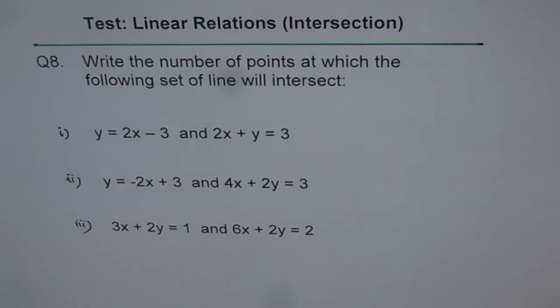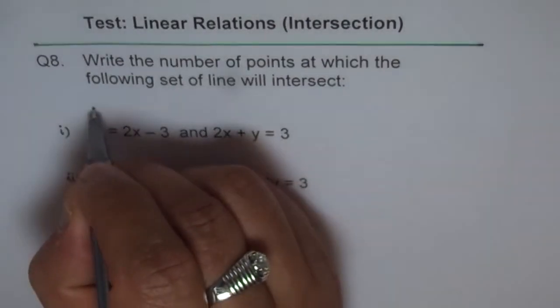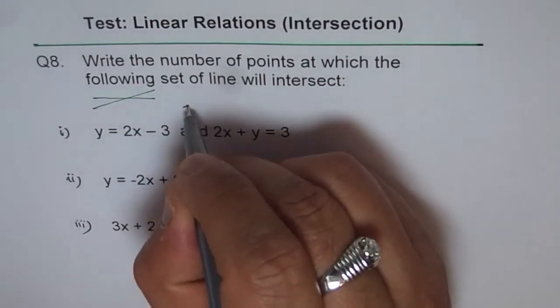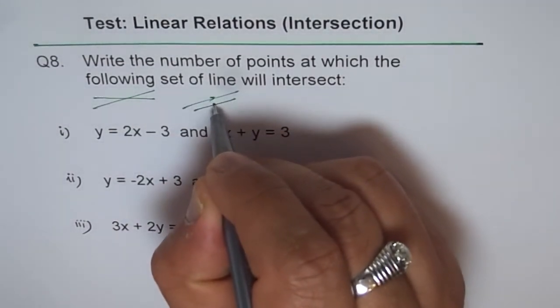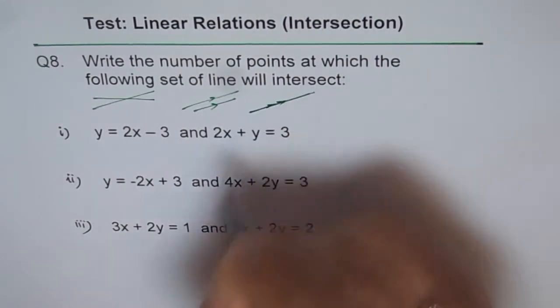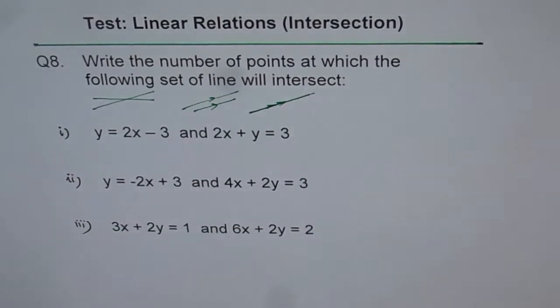As you know, in a linear system we could have one solution, we could have no solution when the lines are parallel, or we could have infinite solutions when they are overlapping. So this is what you need to analyze to answer this question.